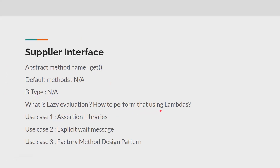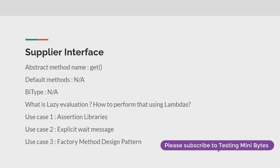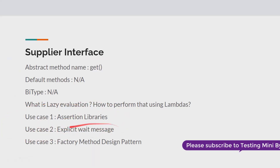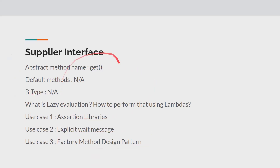We'll also see what is lazy evaluation and how we can perform this using lambdas. This is one of the very important advantages of using functional lambda expressions in Java, apart from writing precise, concise, and more readable code. We'll also see use cases with certain assertion libraries and in our test automation framework — like explicit wait messages and the factory method design pattern.